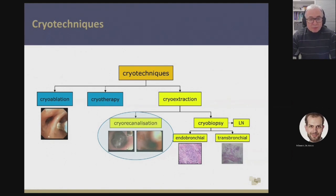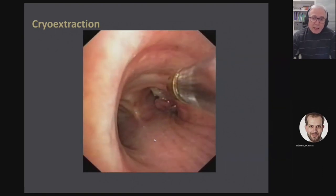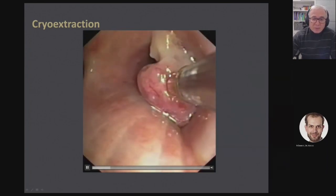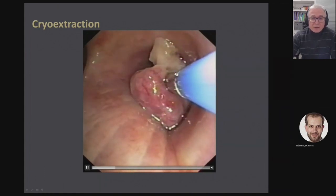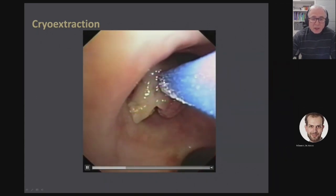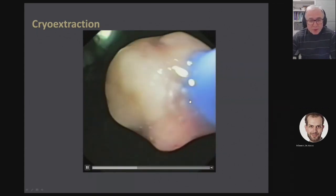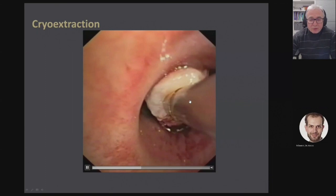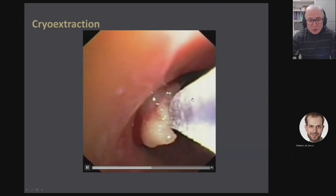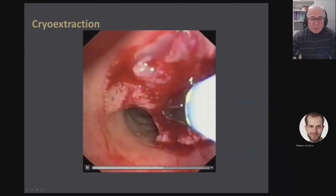Coming to cryo-recanalization — this is a very old video, basically the first video we did on cryo-recanalization. That's the cryoprobe, and this was a colon cancer metastasis in the right main bronchus. By sticking the probe into the tumor and starting freezing, you can see the ice crystals. These are the old cryoprobes. You then pull on the probe and remove it through a tube — it is mandatory to have a tube in this situation because you have to remove the cryoprobe together with the bronchoscope. Therefore you need a safe airway access. The tissue is thawed outside in a water bath, and by repeating this procedure several times, you can reopen the right main bronchus.